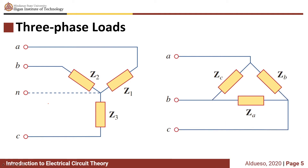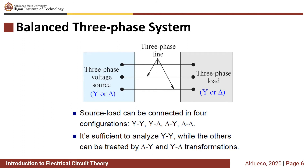Just like the three-phase source, three-phase loads can either be arranged in a Y or delta connection. Having voltage sources and three-phase loads configured into Y or delta, we can have four configurations: Y-Y (Y-connected sources and Y-connected loads), Y-delta (Y-connected sources and delta-connected loads), delta-Y (delta-connected sources and Y-connected loads), and delta-delta (delta-connected sources and delta-connected loads).